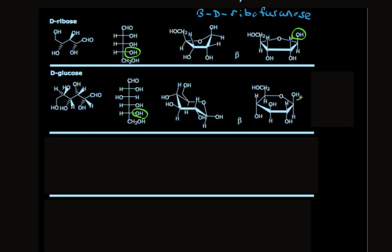Beta-D-glucose, and then we need to say the size of the ring. It's a six-membered ring, so it's a pyranose.